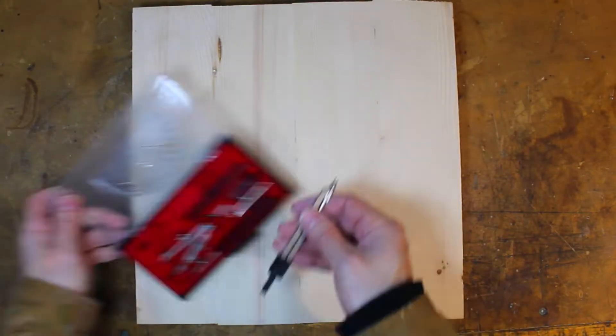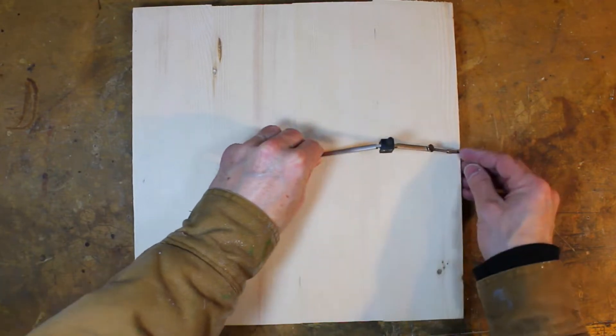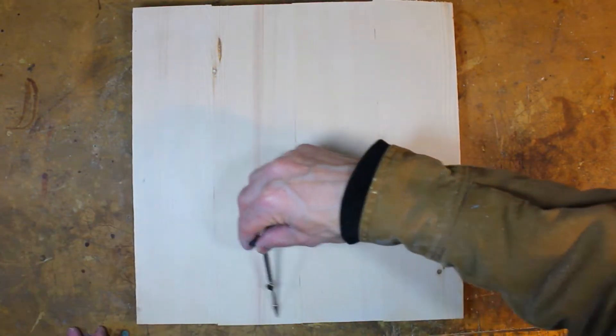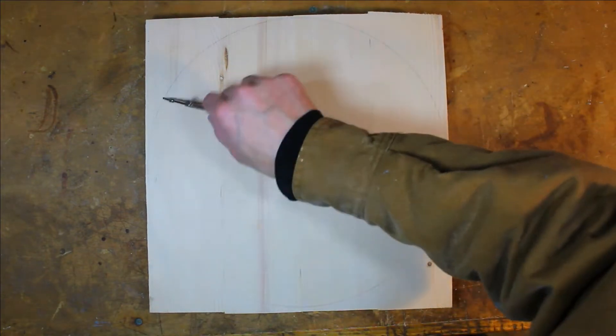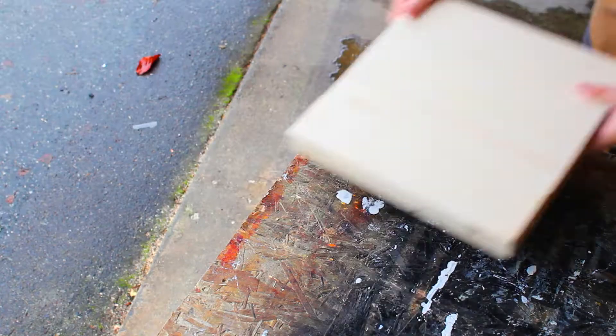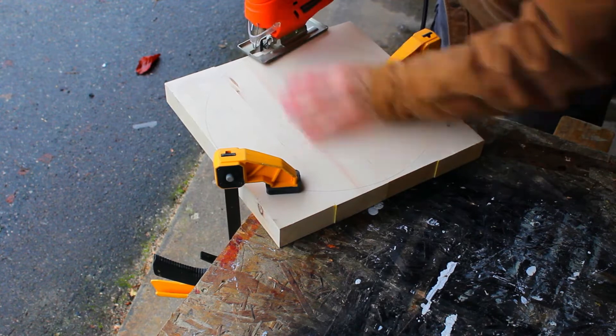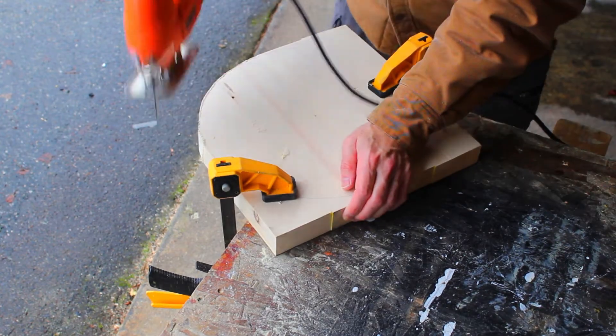These joints are looking good. I'm going to use my compass to draw the circular outline of the stool. If you don't have one, a bucket or any other object that is approximately the right size will do. Or, you can use a pencil and string attached to a nail in the middle. To cut this out, I'll use my jigsaw.